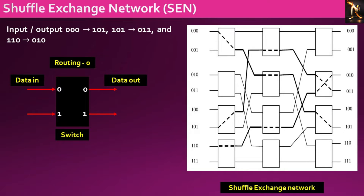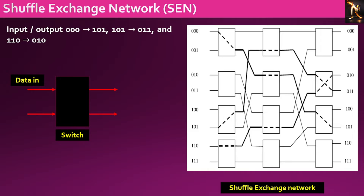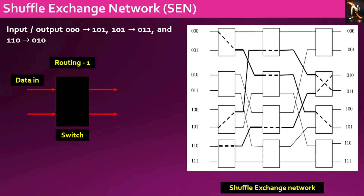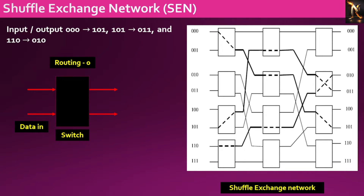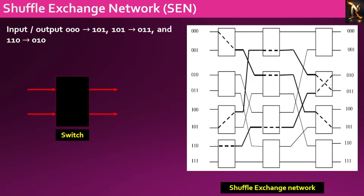To grasp the data routing mechanism in the shuffle exchange network, it is essential to comprehend the functionality of the two-port switch. Data is present at the upper port; for routing 0, the data at the upper port is directed to the upper output port. For routing 1, the data is directed to the lower output port. When the data is present at the lower input port, routing 0 directs it to the upper output port, and routing 1 directs it to the lower output port.